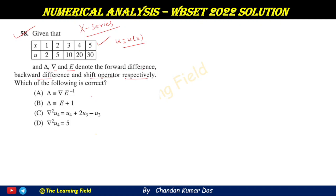Looking at the options, the first two options A and B are identities but they are not correct identities. The correct identity is: capital Δ is equivalent to the shift operator E minus I, where I is the identity operator. If the question needs a relation between operators, and that relation is not given in the exam context, options A and B are false. So the correct answer must be among C and D.